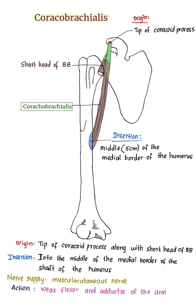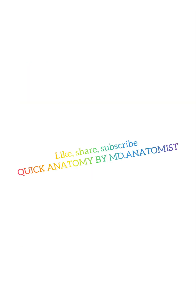In summary: coracobrachialis arises from the tip of the coracoid process, inserts into the middle 5 cm of the medial border of the humerus, is supplied by the musculocutaneous nerve, and acts as a weak flexor and adductor of the arm.